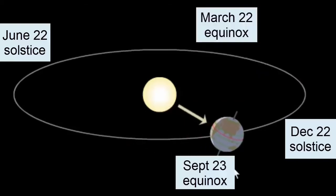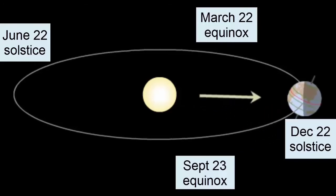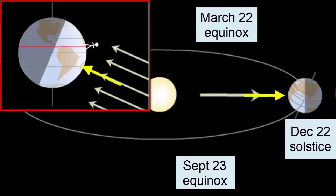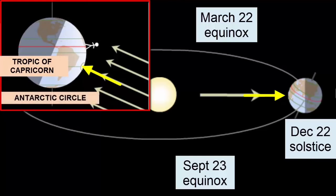As Earth moves towards the December 22nd solstice, the North Pole tilts further and further away from the Sun. At its maximum tilt on solstice day, the Sun's rays are now hitting directly at 23.5 degrees south latitude, or the Tropic of Capricorn. Every location within the Antarctic Circle at the South Pole is getting 24 hours of sunlight. As the Earth rotates, none of these locations is ever lacking in sunlight. This creates the summer season for the Southern Hemisphere.